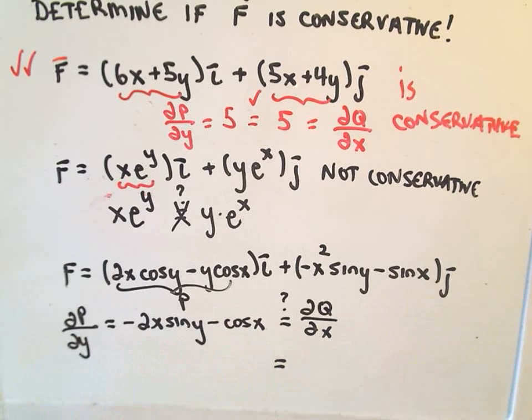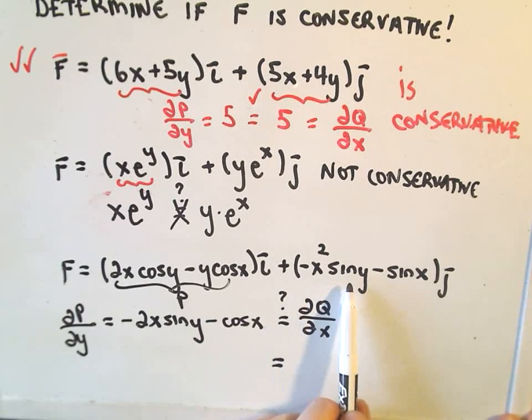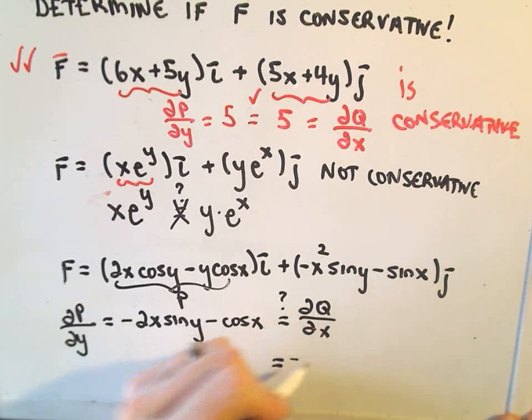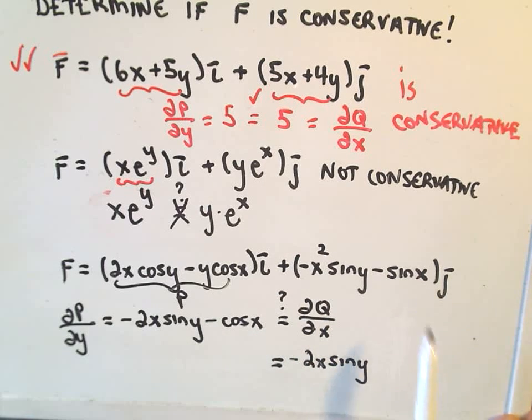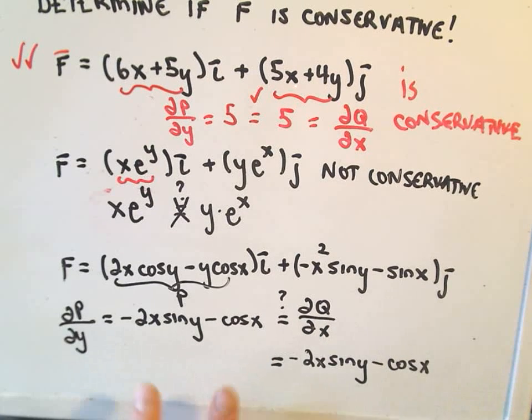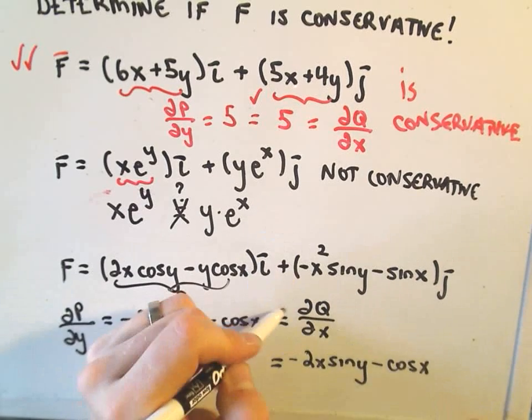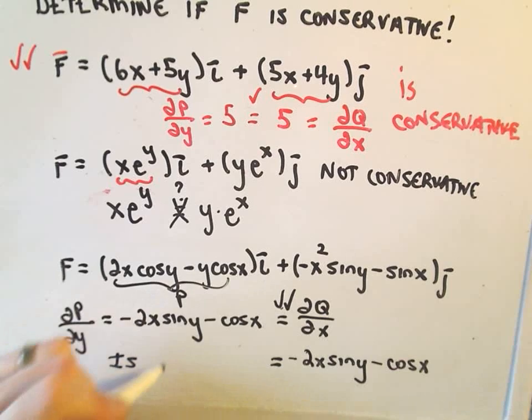So if we take the partial of negative X squared sine Y with respect to X, we'll get negative 2X sine Y. If we take the derivative of negative sine X with respect to X, we'll simply get negative cosine X. It looks like to me those are exactly the same. So, since the partials are equal to each other, we would say yes, this vector field is conservative.